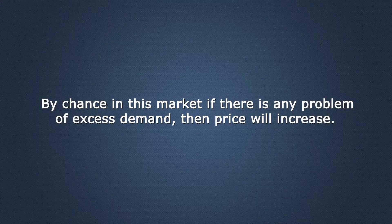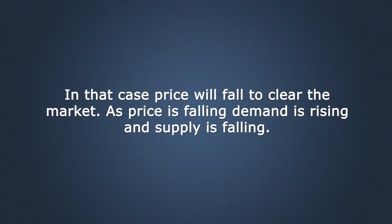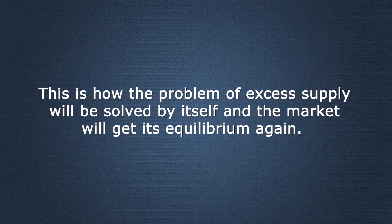By chance, if in this market there is any problem of excess demand, then price will increase. As price increases, demand will fall and supply will rise, and this is how the market will get its equilibrium. The opposite price mechanism will work if there is any excess supply problem — in that case, price will fall to clear the market. As price falls, demand rises and supply falls. This is how the free market will work, and this is called the free trade situation.